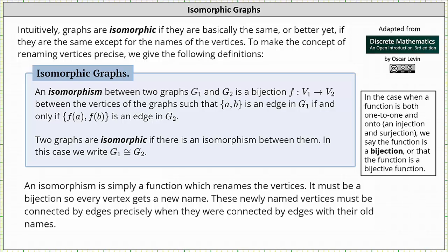Welcome to a lesson on isomorphic graphs. Intuitively, graphs are isomorphic if they are basically the same, or better yet, if they are the same except for the names of the vertices. To make the concept of renaming vertices precise, we give the following definitions.